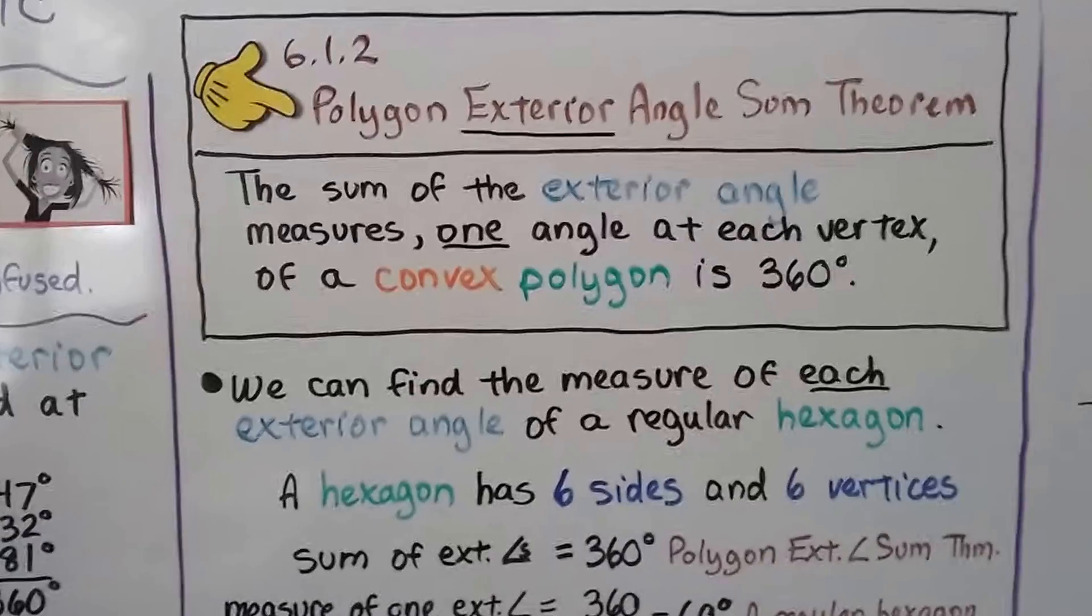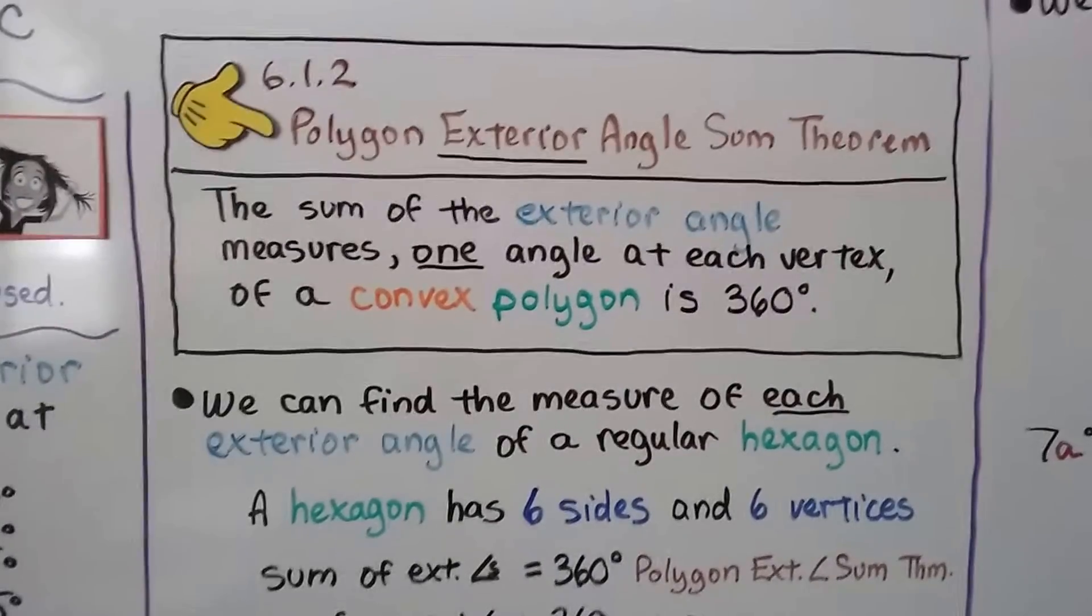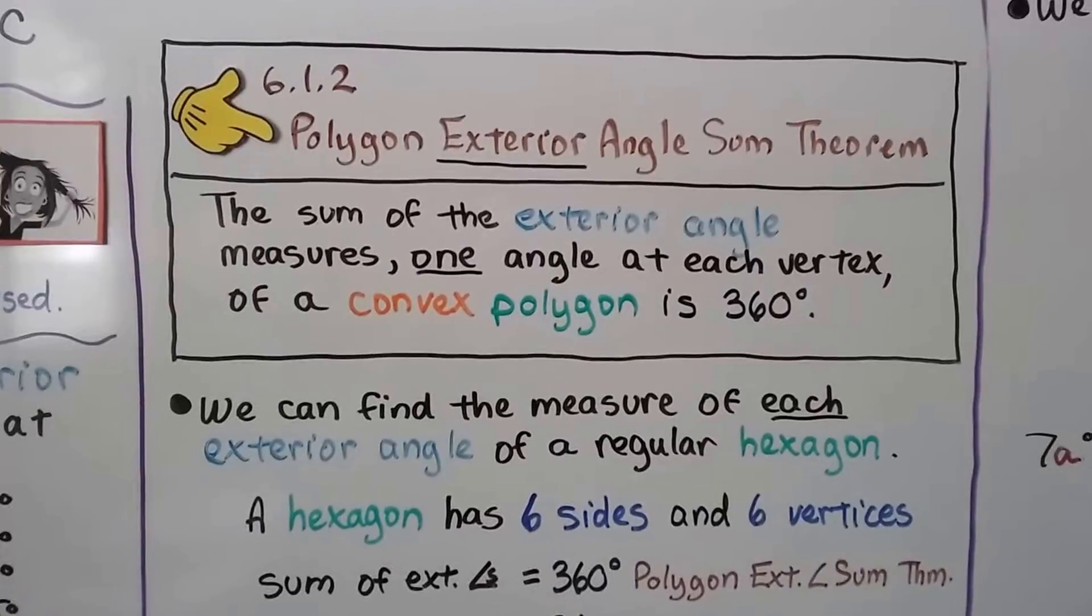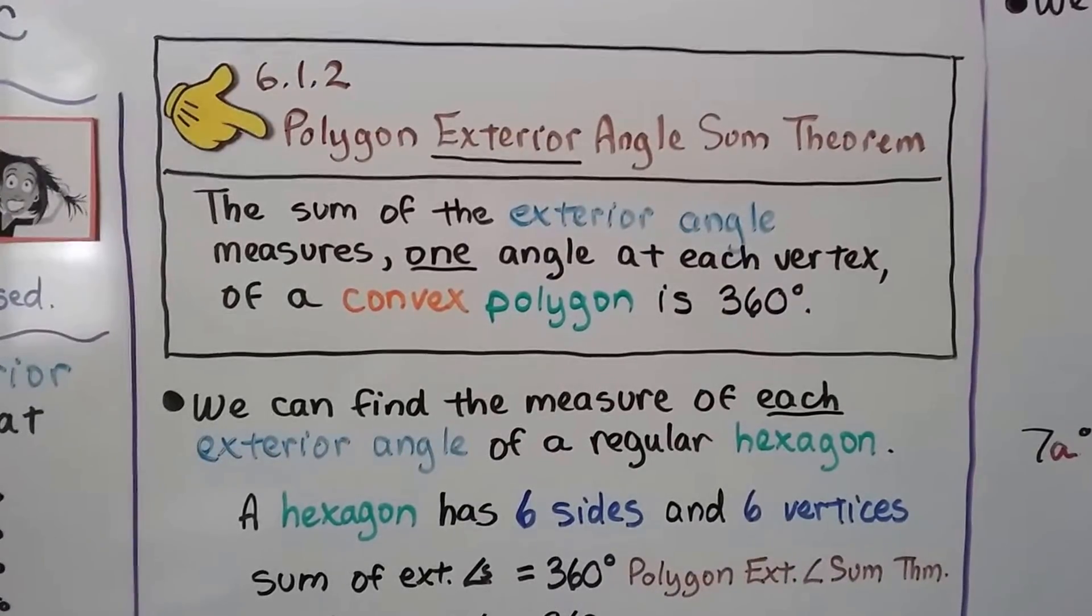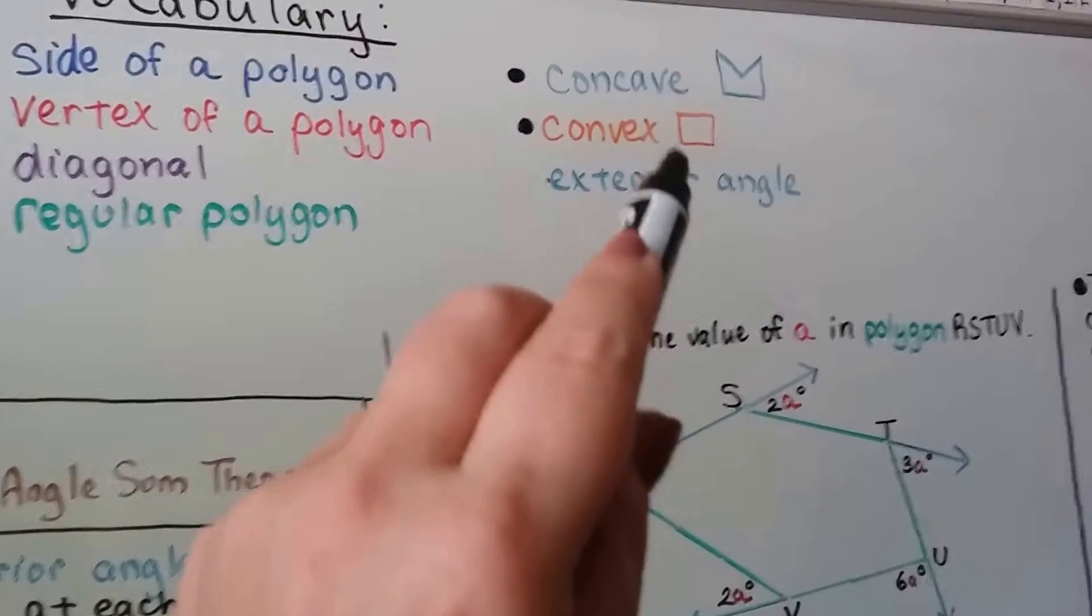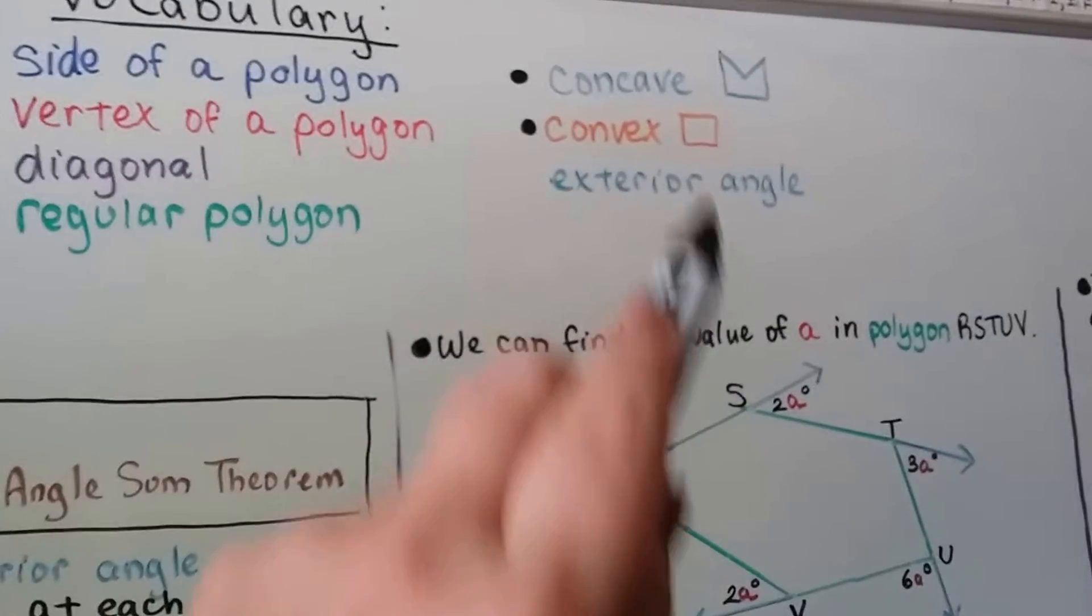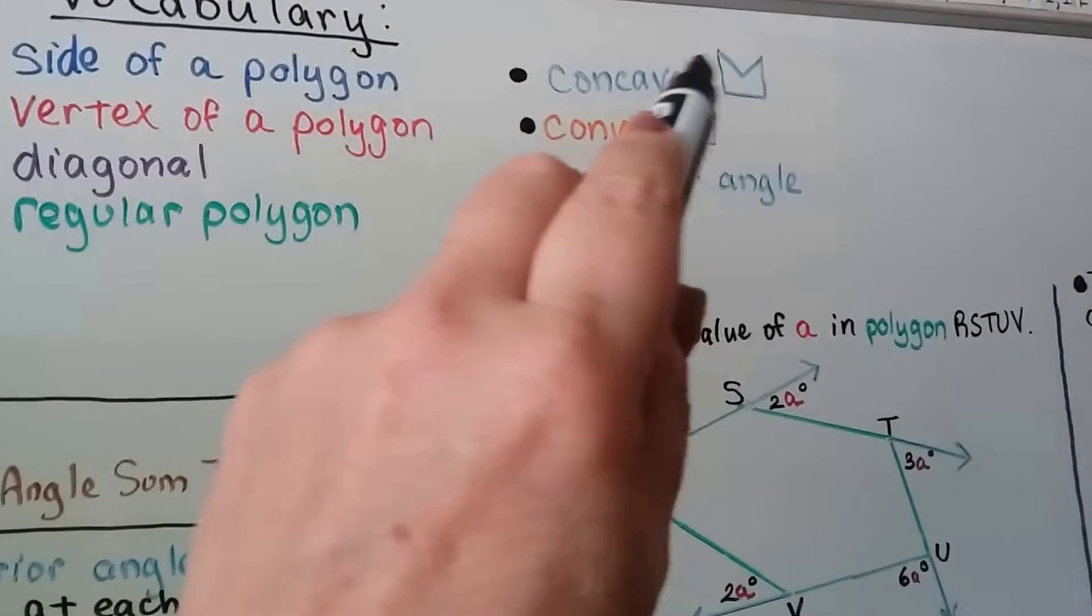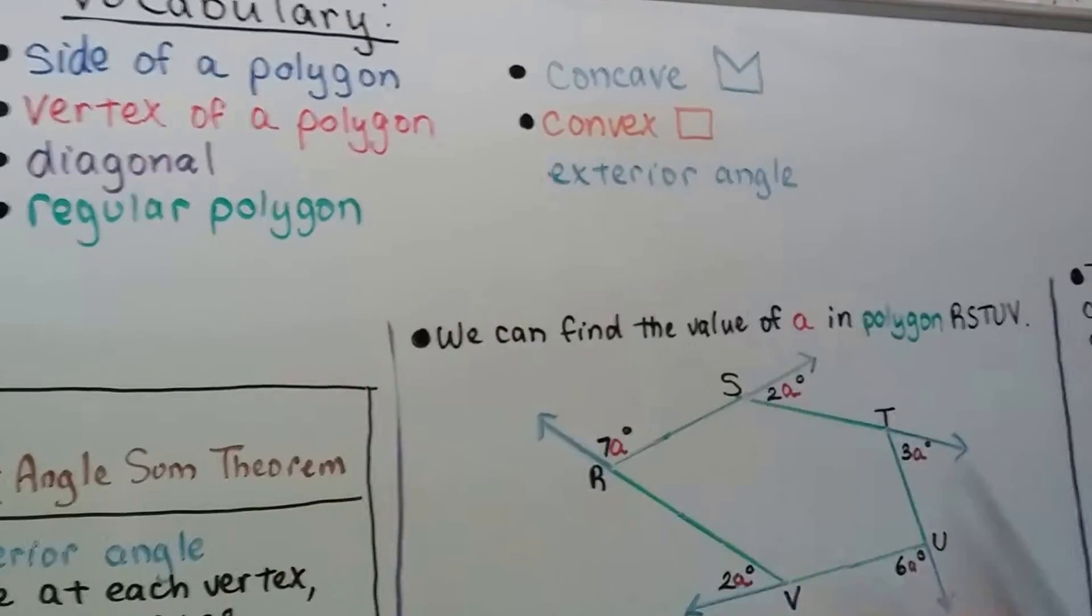So the polygon exterior angle sum theorem says the sum of the exterior angle measures, one angle at each vertex of a convex polygon, is 360 degrees. Remember, convex means that the vertices are pushing outward and the diagonals on the inside. Concave is when it's kind of caving in, and we can put a diagonal across those points on the outside there, the exterior diagonal.